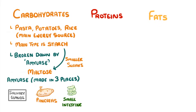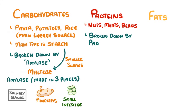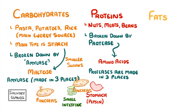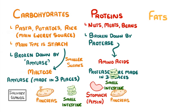Proteins, on the other hand, which are found in things like nuts, meats and beans, are broken down by protease enzymes into amino acids. Just like amylase, proteases are also made in three places: the stomach, where we call it pepsin, and similarly to amylase, also in the pancreas and the small intestine.